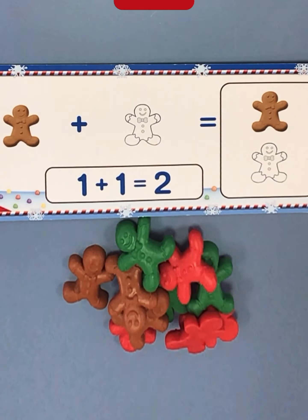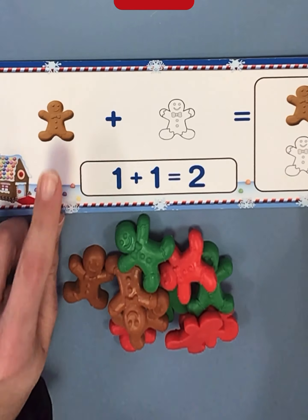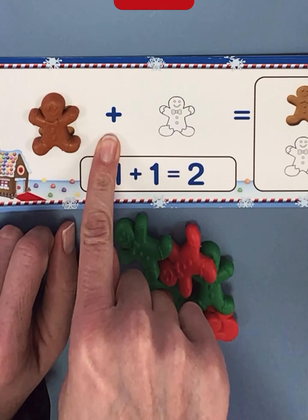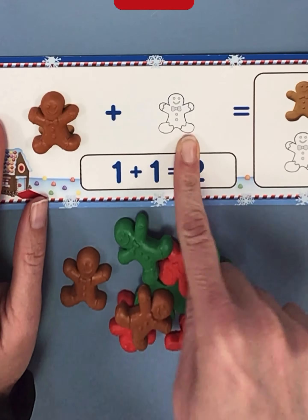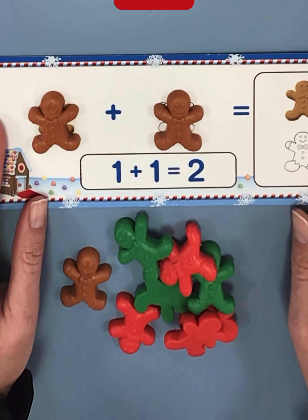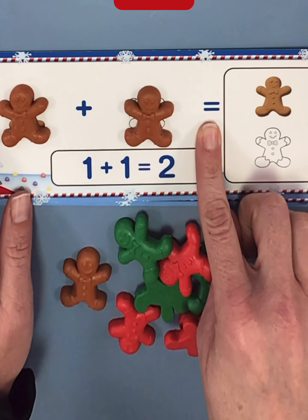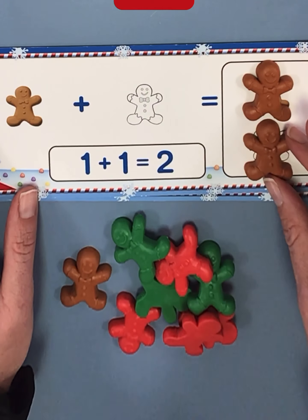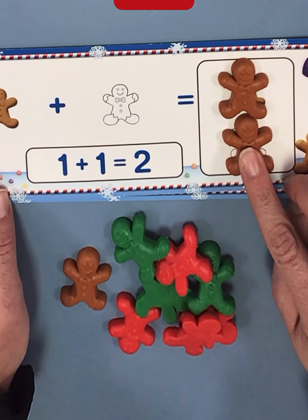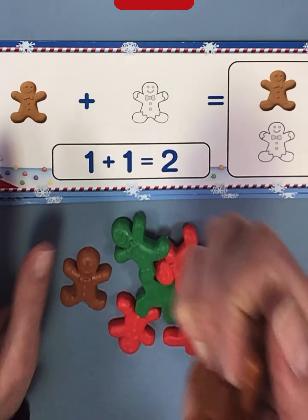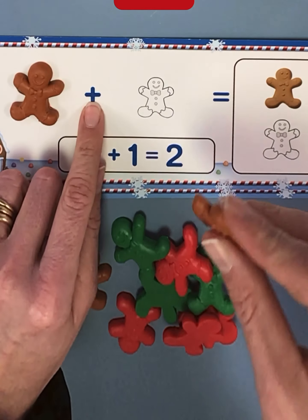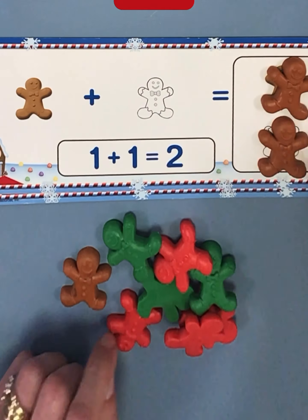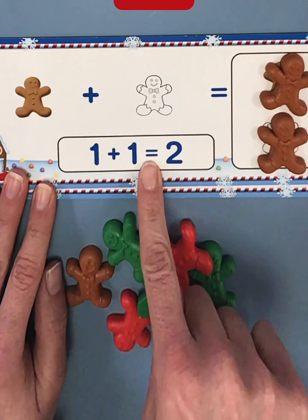Let's practice adding our gingerbread men. On this card, they are going to start with one gingerbread man. There's our special symbol, plus. They want to add more cookies. How many more cookies do they want? That's right, one. One plus one equals, that's our total symbol. Let's slide them to this box and count them all together. Now we have one, two. Two cookies. So one plus one equals two. Let's read our math sentence down here. One plus one equals two.